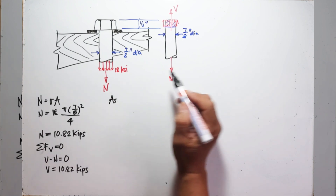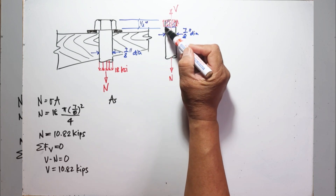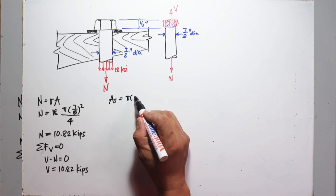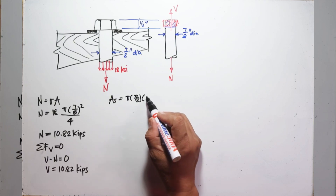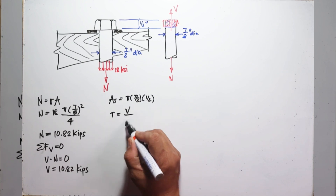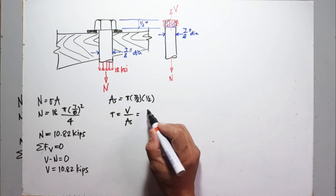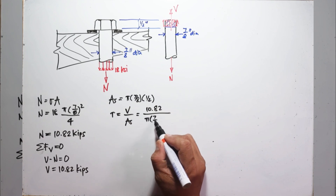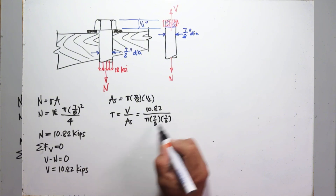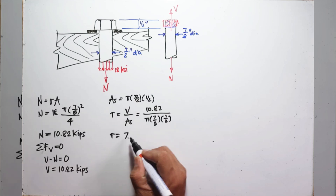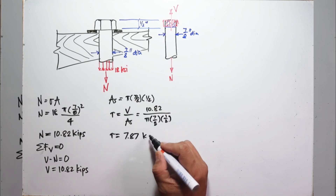The shear area is equal to the circumference of the bolt multiplied by the height of one-half inch, so that is π times diameter times one-half. The shearing stress is the shear force over the shearing area: 10.82 kips divided by that area. We get the shearing stress in the head of the bolt equals 7.87 KSI.